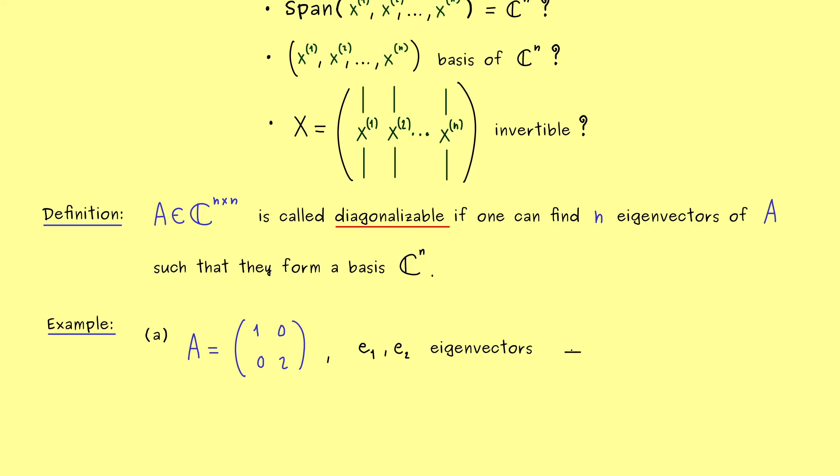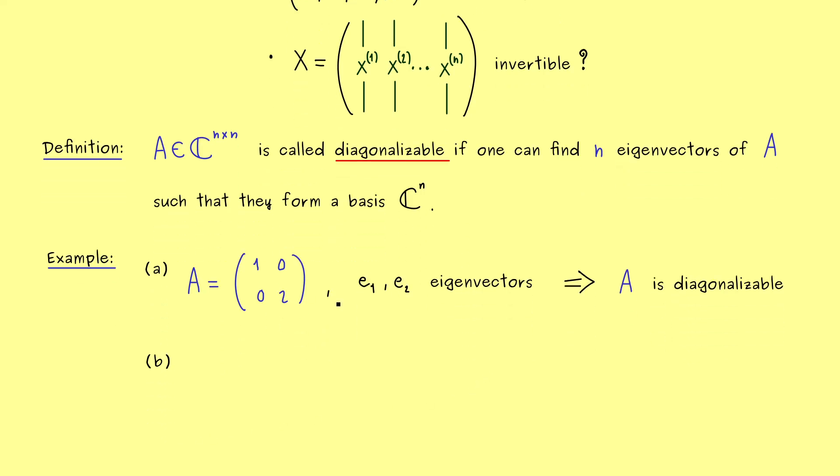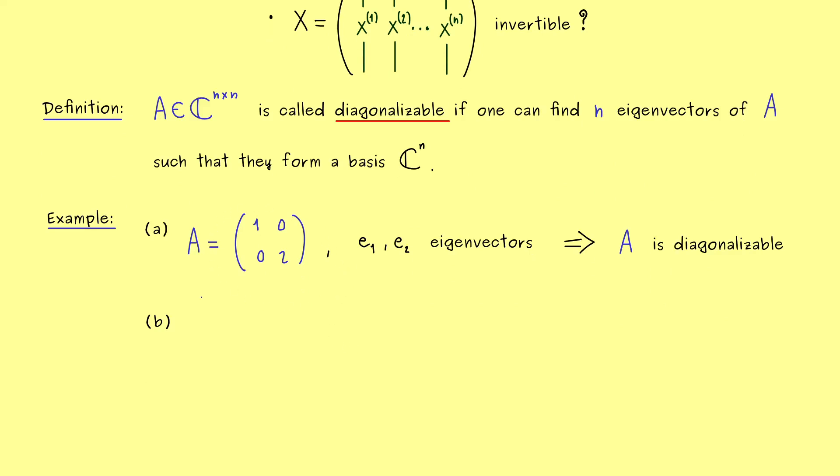There, we know that the canonical unit vectors are eigenvectors. So for example, for the 2×2 matrix here, E1 and E2 are eigenvectors. And of course, this is the standard basis of C^2, and therefore A is diagonalizable. Of course, each diagonal matrix should be a diagonal matrix as well. However, the important question is, what happens if we go to a matrix which is not of diagonal form already?